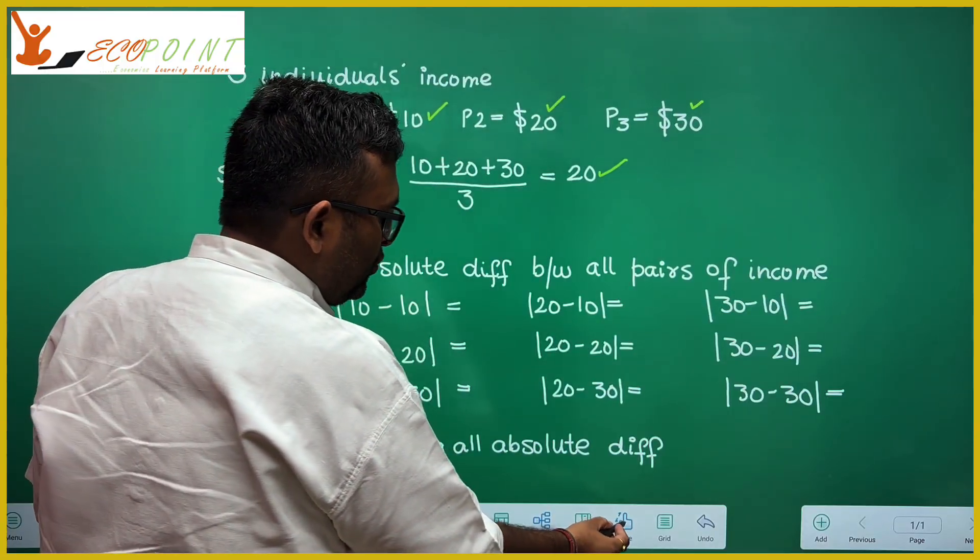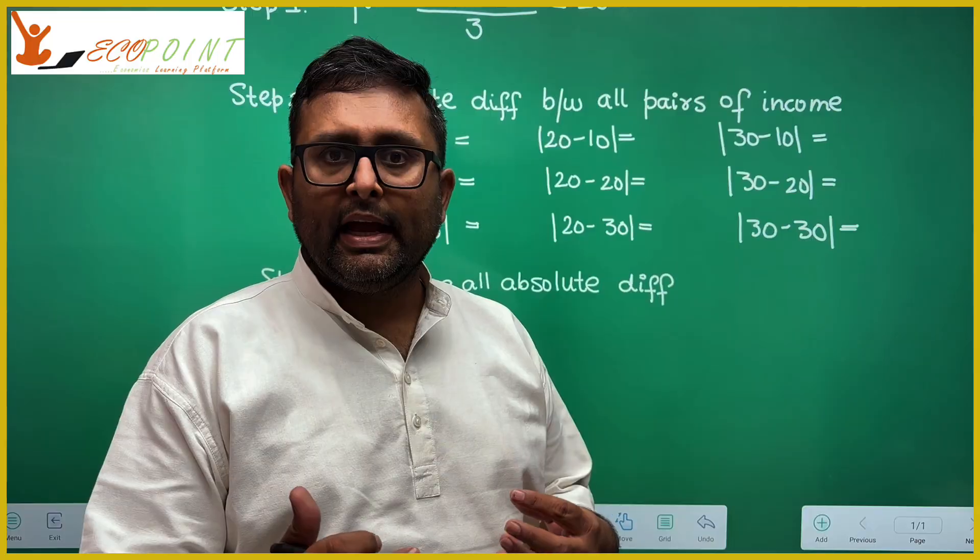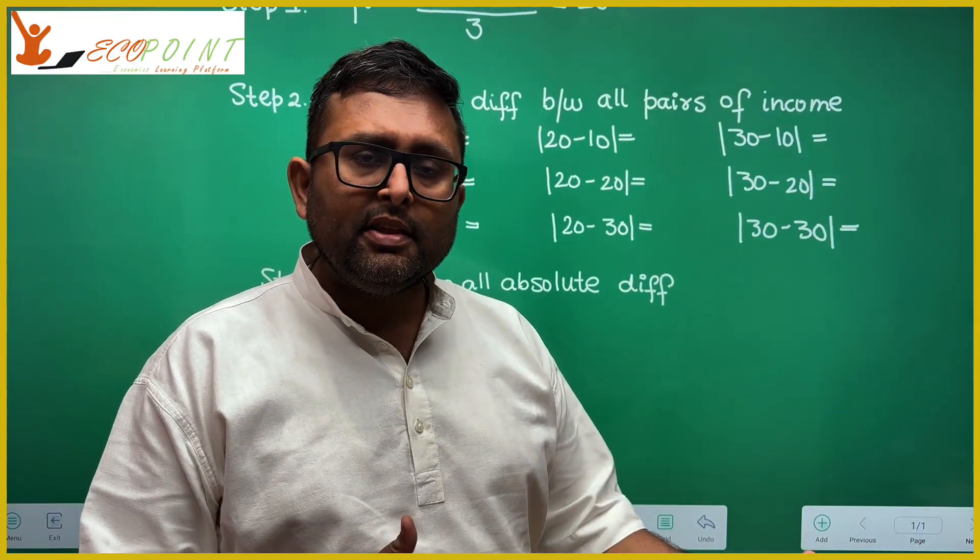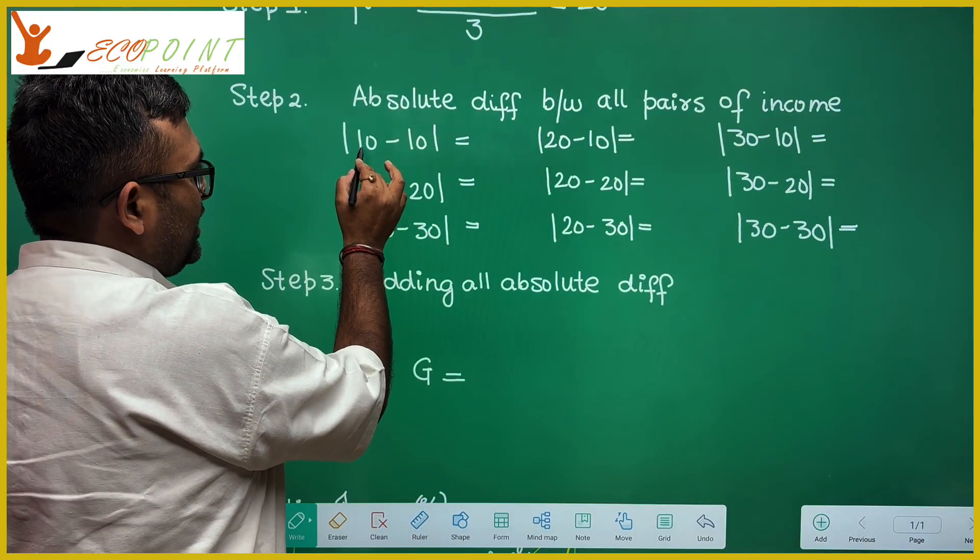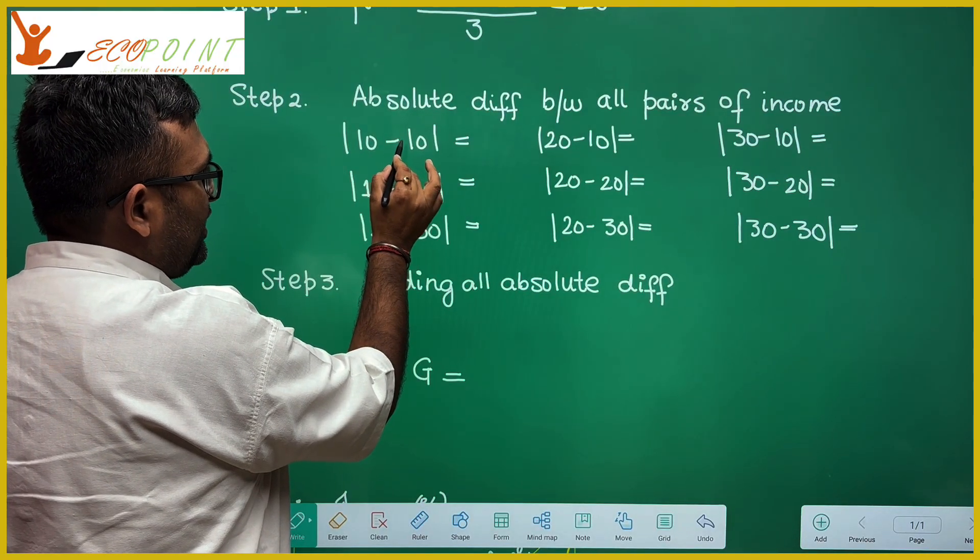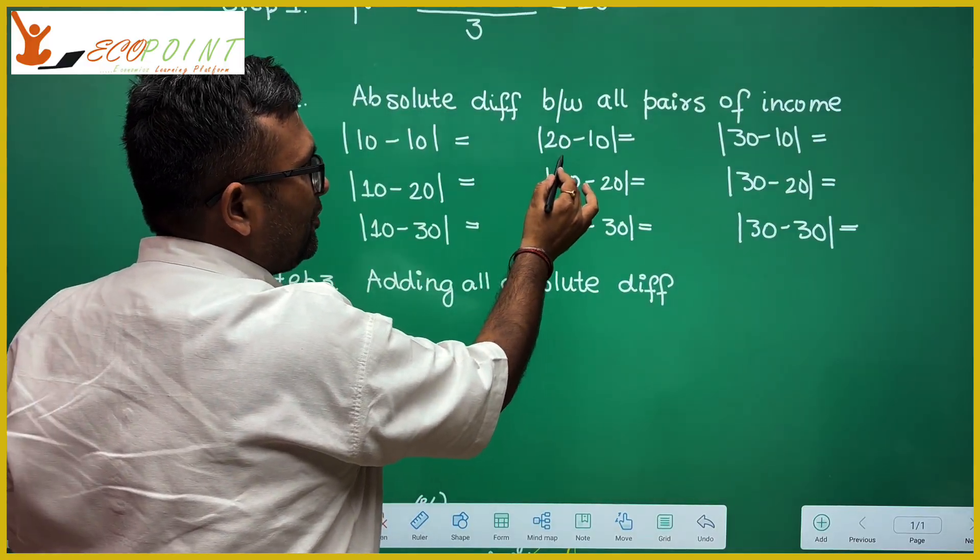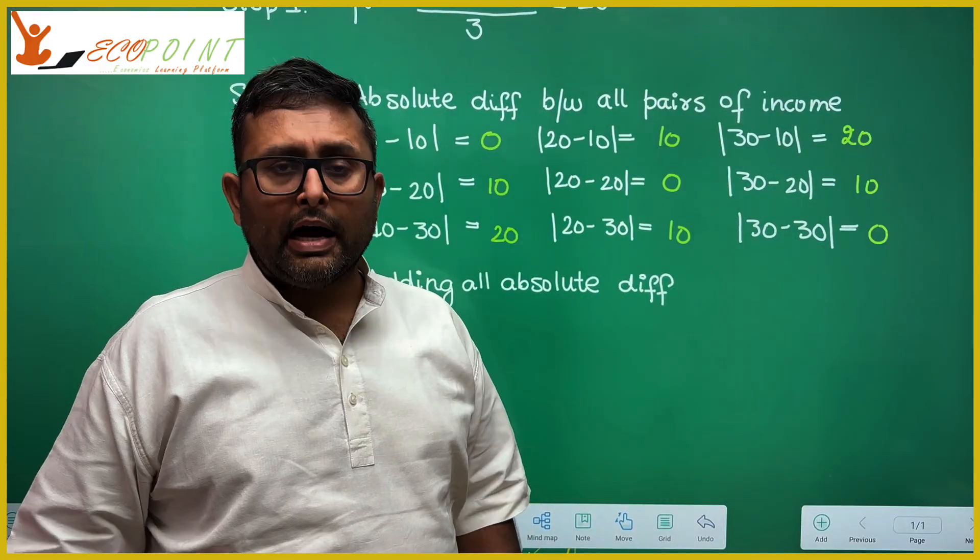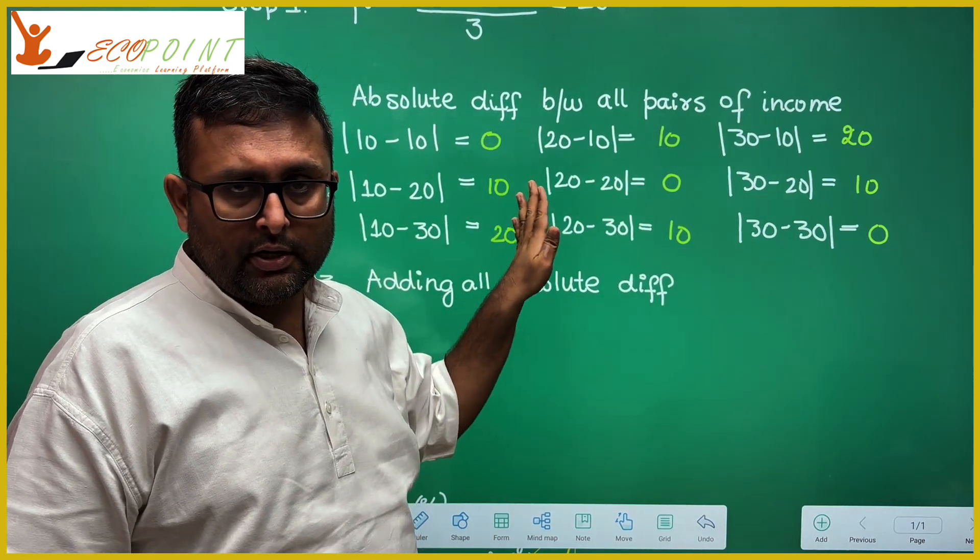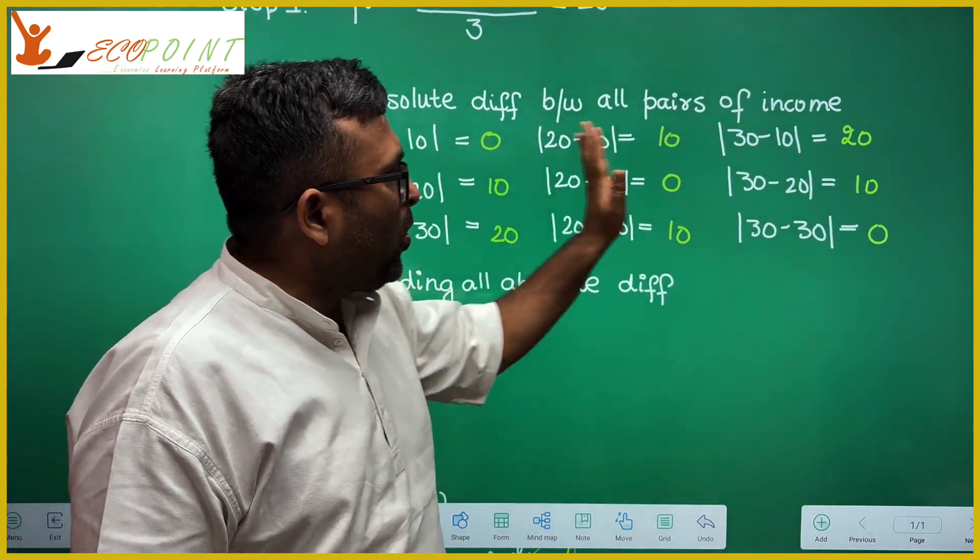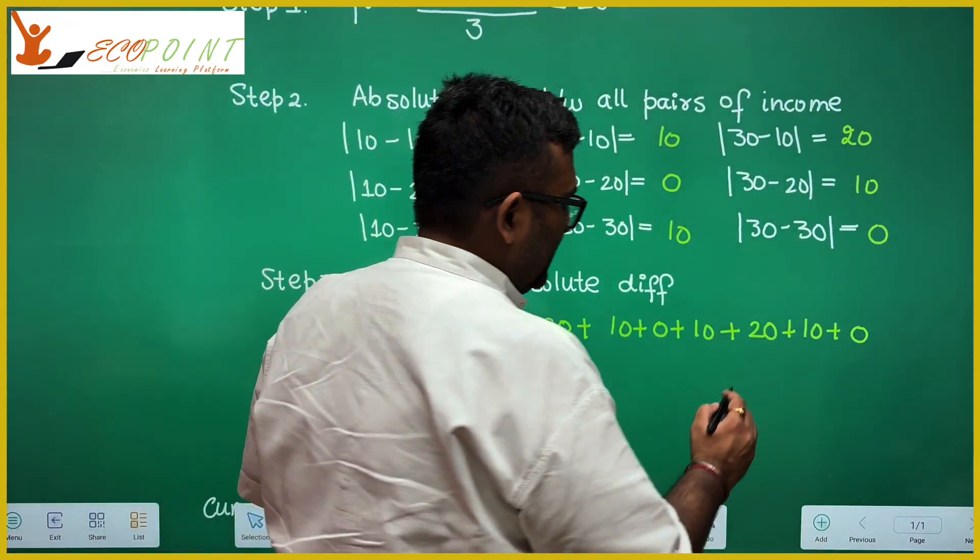Now what we are going to do is we had three pairs of income: 10, 20, and 30. So we will take the pairwise absolute deviation. Income level 10's deviation from 10, 10's deviation from 20, 10's deviation from 30, and similarly for 20 and 30. Now what you do is that you have taken up these absolute deviations between the pairs of income. We will add all of these absolute differences. Once you add all of these differences you get 80.